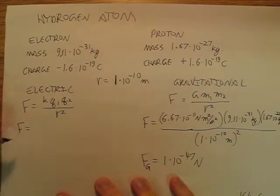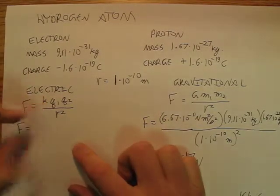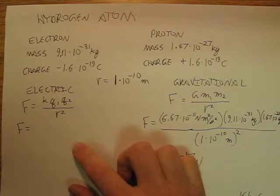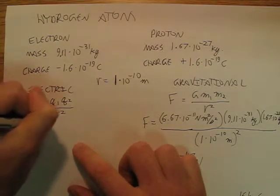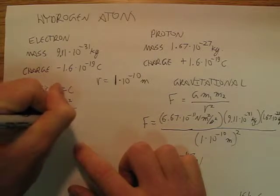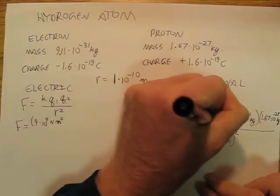And so I go over here, and I remember my k, my Coulomb's constant, is 9 times 10 to the 9th newton meter squared—oh, that's kilogram squared.